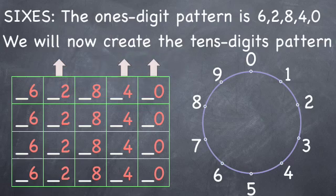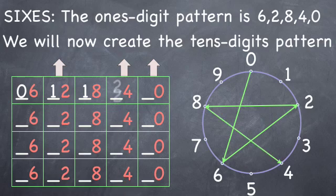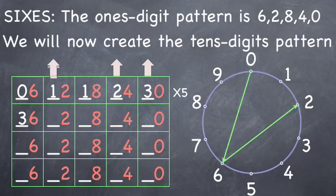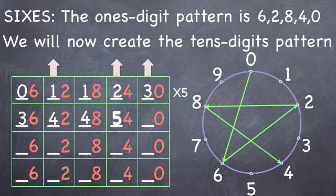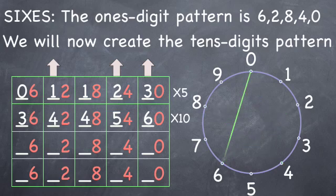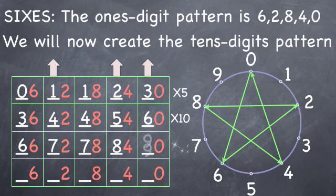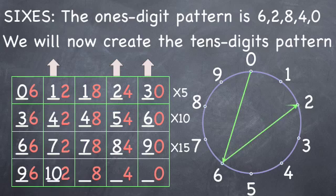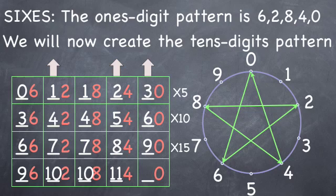Let's make our star as we add the tens: 0, 1, 1, up to 2, and up to 3 — and that's 5 times 6 is 30. Continuing on: 3, up to 4, 4, 5, and up to 6 — and 10 sixes are 60. Continuing on: 6, up to 7, 7, up to 8, and up to 9. One more time: 9, up to 10, 11, and up to 12, and we're at 20 times 6 is 120.